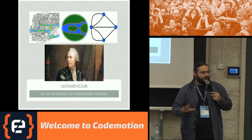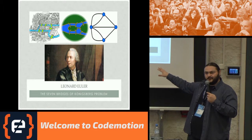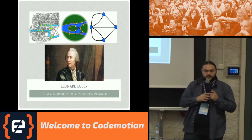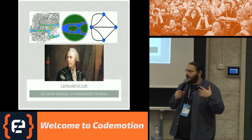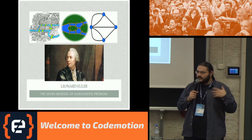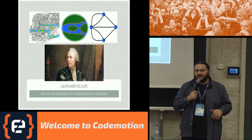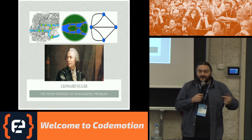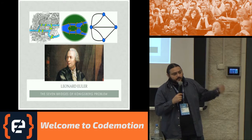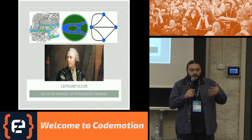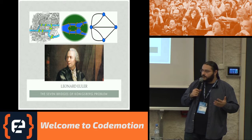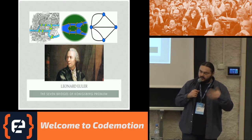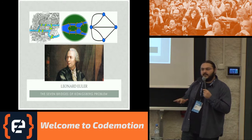That proof was the Seven Bridges of Königsberg. The Seven Bridges of Königsberg was a theoretical question of how you can visit all the bridges in Königsberg — which is Kaliningrad, a city in Russia today. The problem was how you can cross all seven bridges only once and visit all parts of Königsberg. Euler presented a general proof that it's not actually possible, and this is considered the birth of graphs as a mathematical subject.